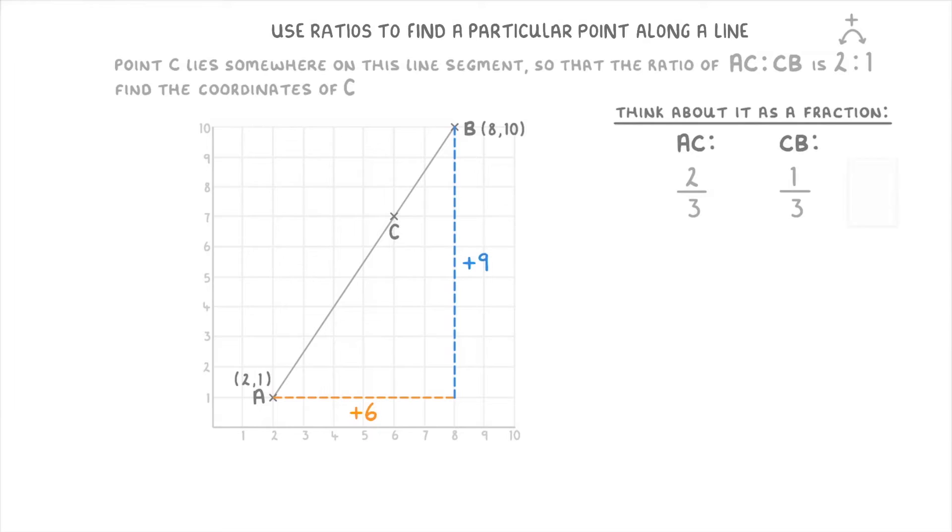Then because we know that C is 2 thirds of the way between A and B, we just need to find 2 thirds of the change in x and 2 thirds of the change in y. Because that will tell us how far we need to move along the x axis and up the y axis to get from A to C.